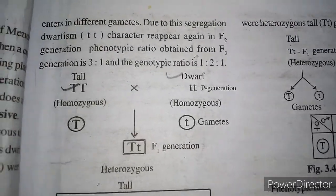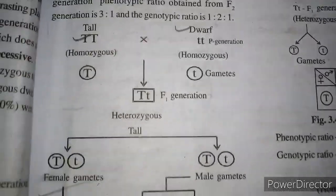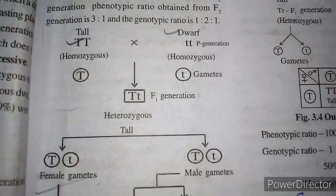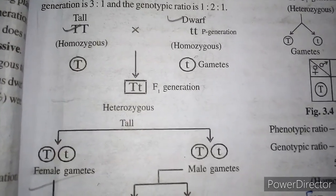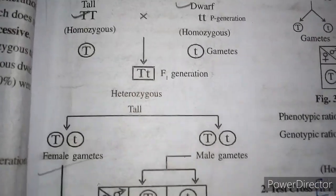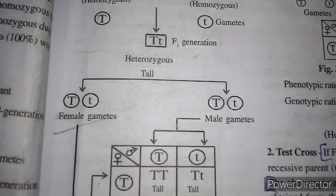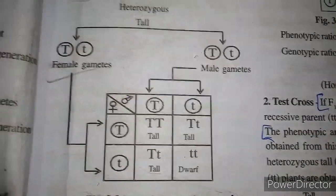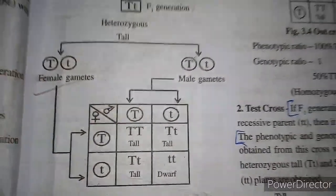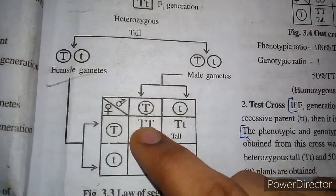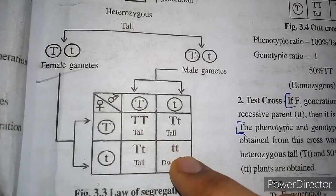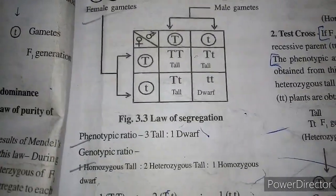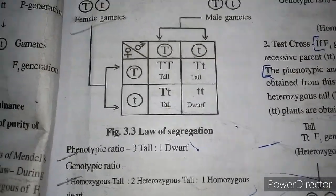The phenotypic ratio obtained from the F2 generation is 3 tall : 1 dwarf, and the genotypic ratio is 1 : 2 : 1. For example, in the F2 generation from a heterozygous F1 (Tt), the female and male gametes are capital T and small t. The cross gives: capital T capital T, capital T small t, small t capital T, and small t small t. You can see three tall plants and one dwarf — phenotypic ratio 3 tall : 1 dwarf.